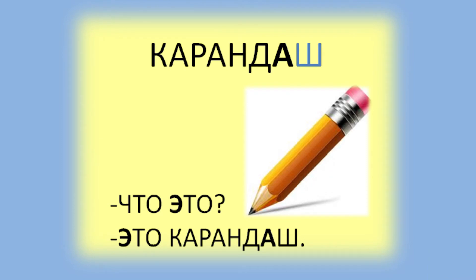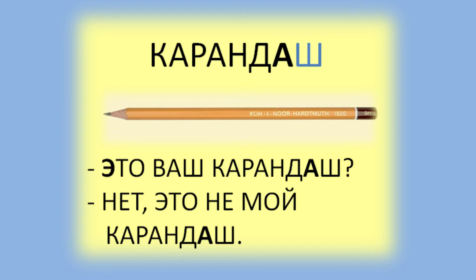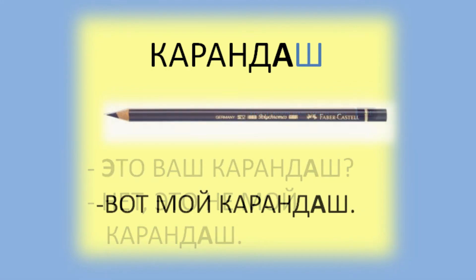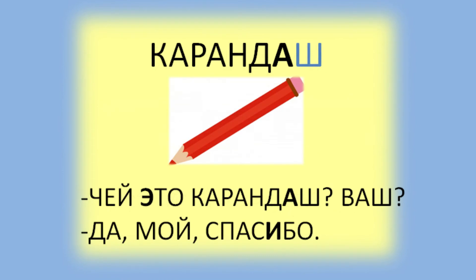Карандаш. Pencil. Что это? What is it? Это карандаш. It is a pencil. Это ваш карандаш? No, это не мой карандаш. It is not my pencil. Вот мой карандаш. Here is my pencil. Чей это карандаш? Whose pencil is it? Ваш? Yours? Да. Мой. Спасибо. Yes, it is mine. Thank you.